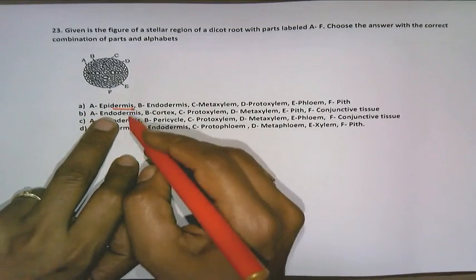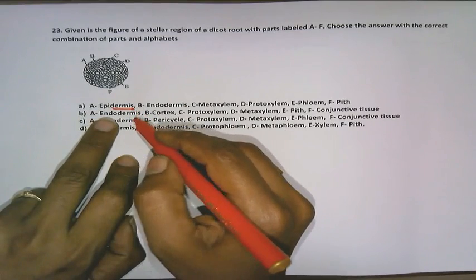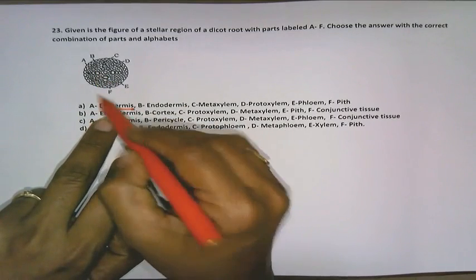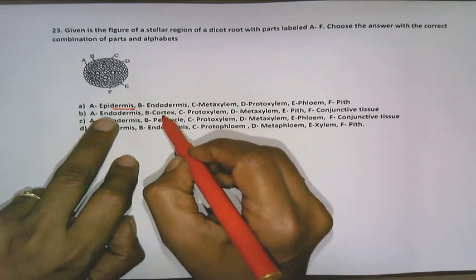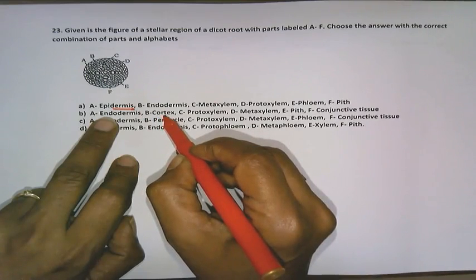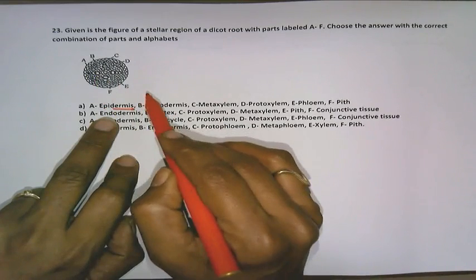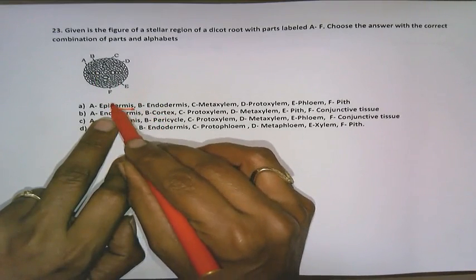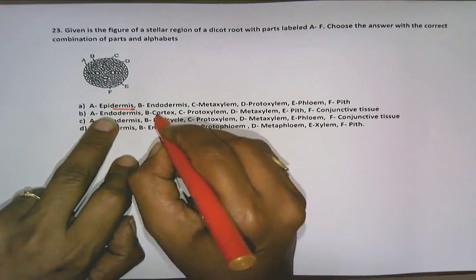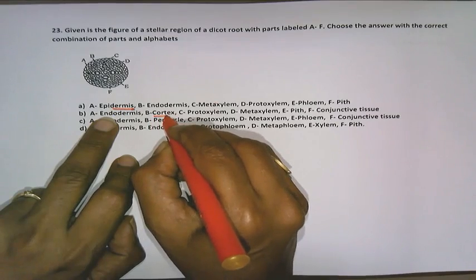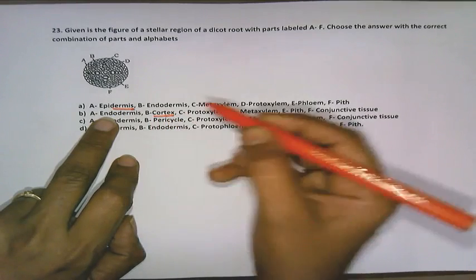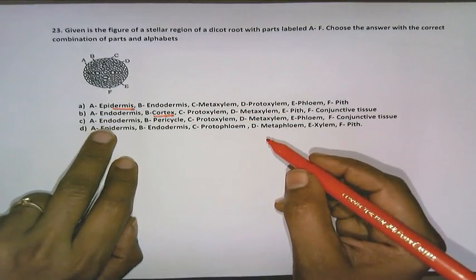Next, as we go on to option B, what we see is A is represented as endodermis, that may be right. But B is represented as cortex, very close to cortex, very close to endodermis, the cortex cannot be present. So because of B, the option is wrong here because of cortex.